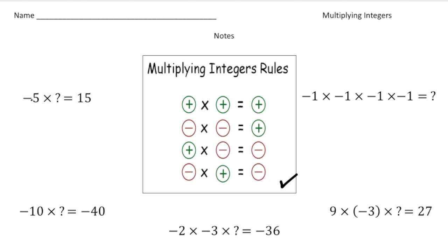So here we have negative five times blank equals 15. We're ending up with a positive, which means the missing number has to be a negative. So negative five times negative three equals 15. Next, negative 10 times a number equals negative 40. To get a negative product, one factor has to be negative and one positive, so the answer is positive four.